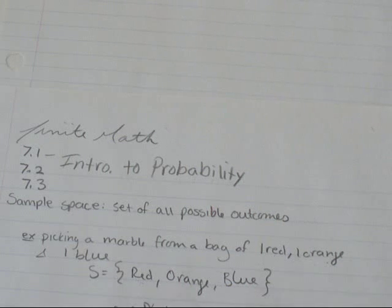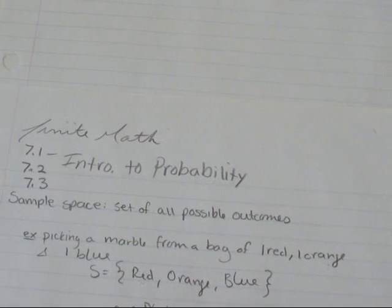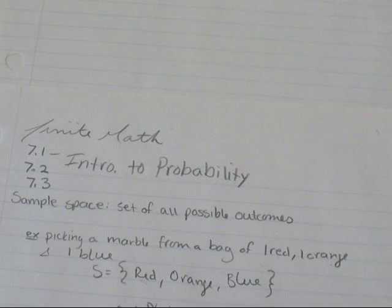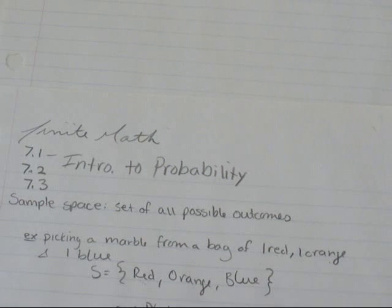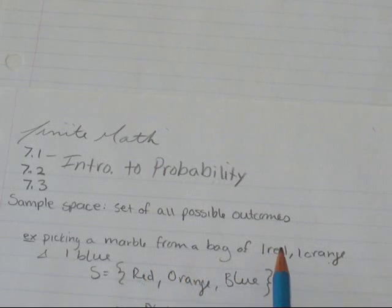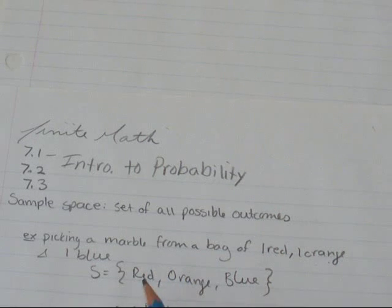So, the first thing that we want to learn is that a sample space equals the set of all possible outcomes. So, what that means is, for example, picking a marble from a bag of one red, one orange, and one blue.